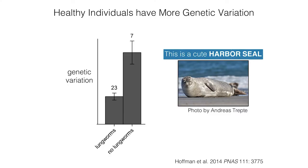We have some evidence for this from harbor seals. These individuals compared harbor seals that had a lung worm — a worm that lives in the lung, which is not a good thing — to those that were healthy. They observed that there was more genetic variation in the healthy individuals than the sick individuals. This is consistent with the idea that outbred individuals, the ones with more genetic variation, are less likely to be infected, while inbred individuals exposed to the lung worm are more likely to get sick.